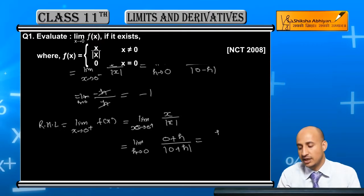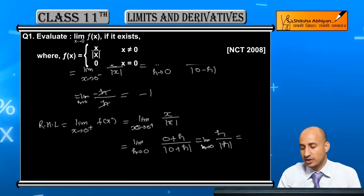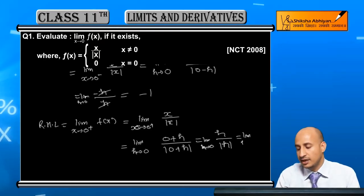In this case, you will get limit h→0 of h/|h|. Since h is positive, |h| = h, so this becomes h/h, which equals 1.